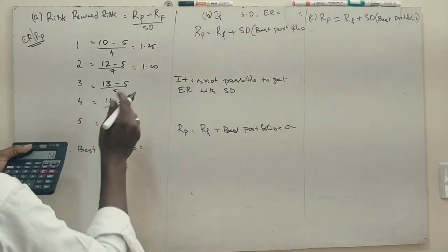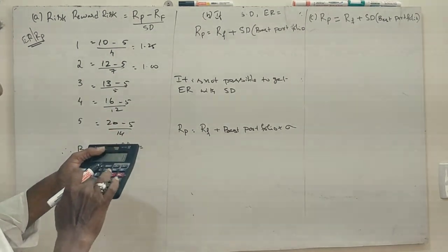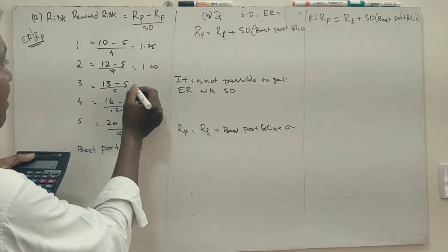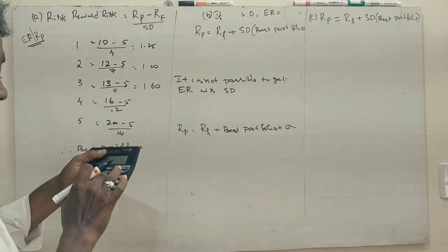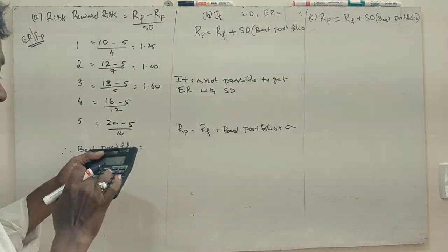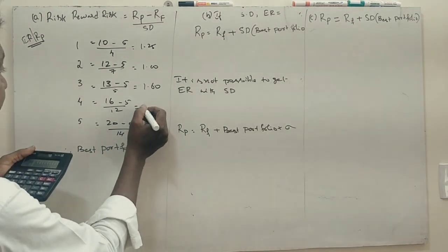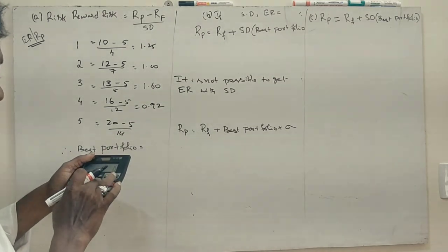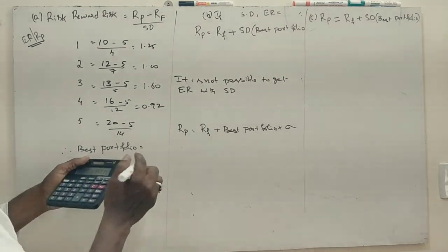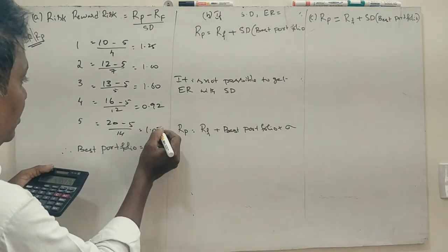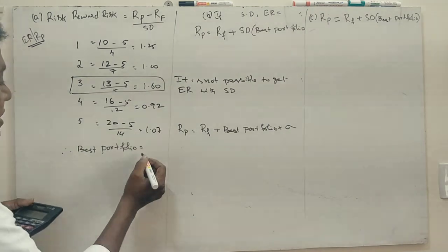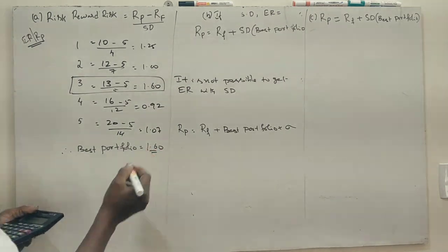13 minus 5 divided by 5 is 1.60. 11 divided by 5 is 0.92. So 15 divided by 14 is 1.07. See, the best portfolio is the third one, that is 1.60 is the best portfolio.